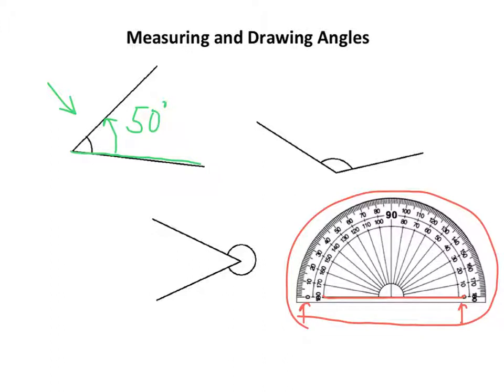Now, if you put, and I don't see why anyone would ever do this, if you put the straight edge along there, along the other line and measure around, you'd still hit 50, but you'd be using the other scale.